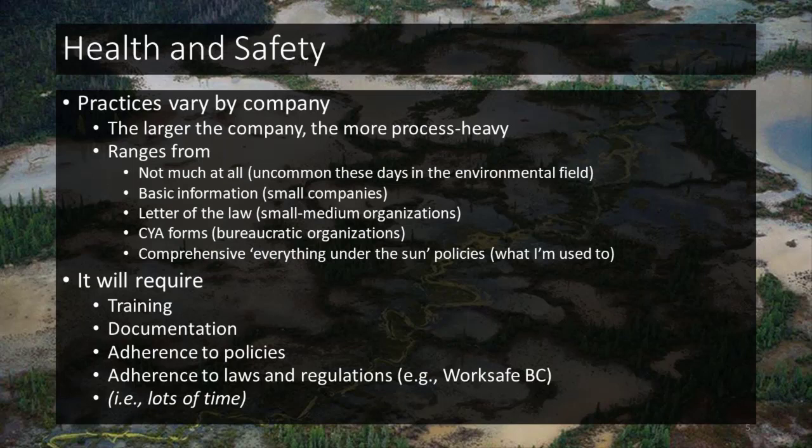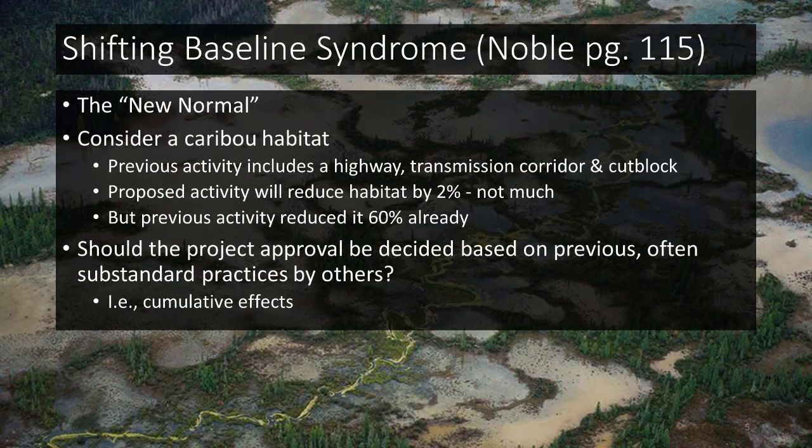Another very interesting topic is shifting baseline syndrome. The Noble textbook gives a case study about 'the new normal': they look at caribou habitat, do a baseline assessment, find an activity will only reduce habitat by two percent, and call it negligible. But when examined more closely, they find highways, transmission corridors, and cut blocks have already reduced habitat by sixty percent — making that two percent seem considerably larger.